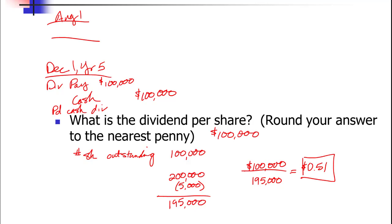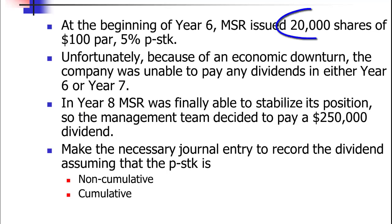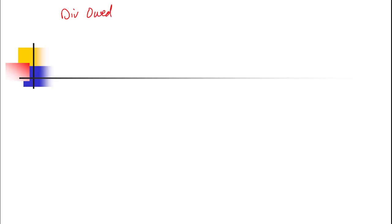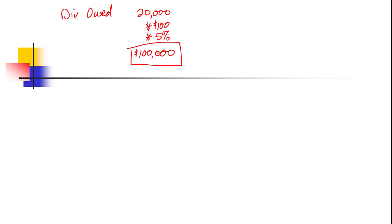Let's make this more interesting by throwing in preferred stock. At the beginning of year six, MSR has 20,000 shares of $100 par value, 5% preferred stock. Because of an economic downturn they haven't been able to pay dividends in year six or year seven, but in year eight things are starting to look up and they're going to pay a $250,000 dividend. We want to make the journal entry if the preferred stock is cumulative and if it's non-cumulative. The first thing we need to know is the dividend owed to the preferred stockholders: 20,000 shares times $100 par value times 5% equals $100,000 per year — that's what we owe them every single year.